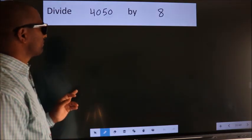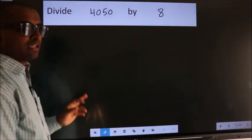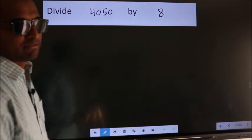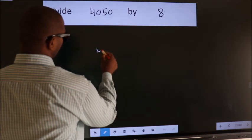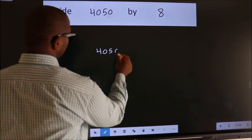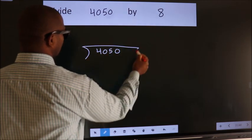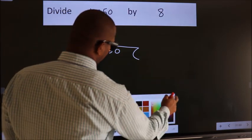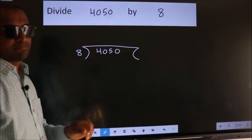Divide 4050 by 8. To do this division, we should frame it in this way. 4050 here, 8 here. Good. This is your step 1.